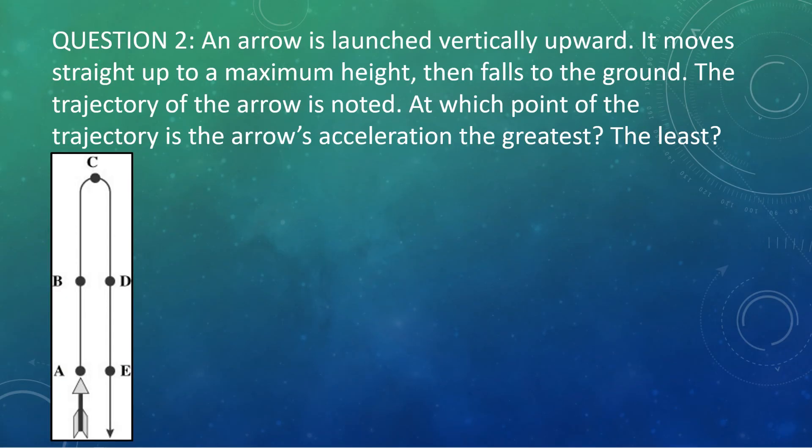Alright, question two. An arrow is launched vertically upward. It moves straight up to a maximum height, then falls back to the ground. The trajectory of the arrow is noted in the image on the bottom left. At which point of the trajectory is the arrow's acceleration the greatest, and where is it the least? So, in this case, keep in mind what we just talked about. At every single point, gravity is acting in the same way. So, this is actually a trick question. The acceleration is the same at all points A, B, C, D, and E. It is always a negative 9.8 meters per second squared. Always.